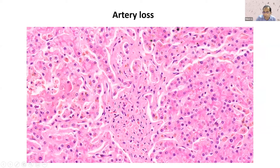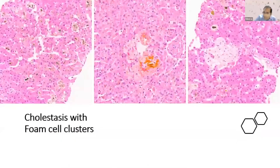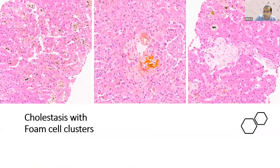Arterial loss is also important in the evolution of chronic rejection, as it can lead to allograft failure. Other late features include bile lakes and presence of foam cells. Foam cells are considered a late feature, and when you see them, most of the time the CR has progressed to the point of no return. You can see multiple foam cell clusters with extensive cholestasis in the lobular parenchyma.